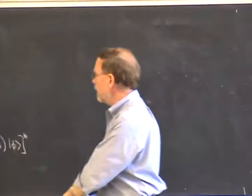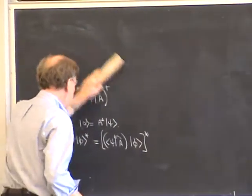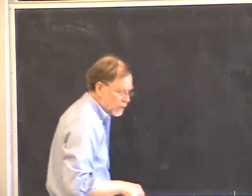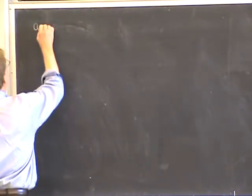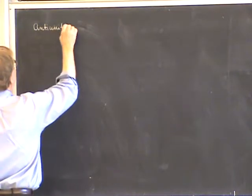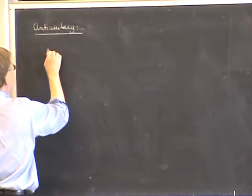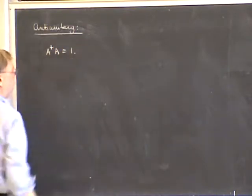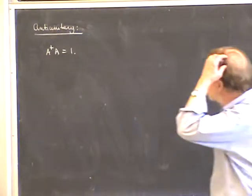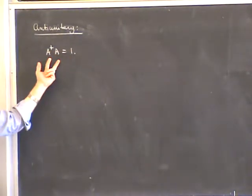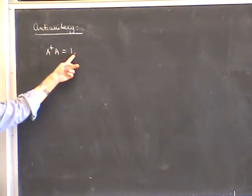Time reversal is the only anti-linear operator we will ever use in this course. Now I want to say something about anti-unitary operators. An anti-unitary operator is defined by the condition A† A = 1. Note that the product of two anti-linear operators is a linear one, so it makes sense to equate this to 1, which is a linear operator.